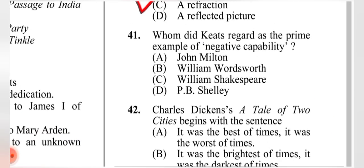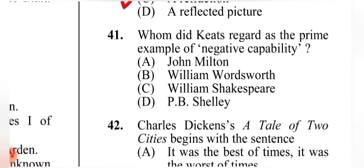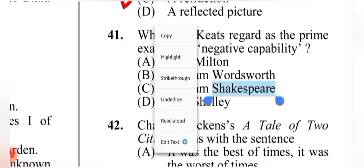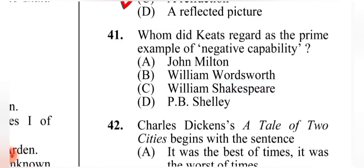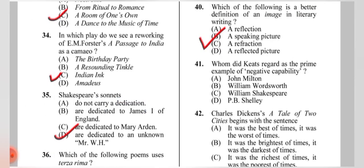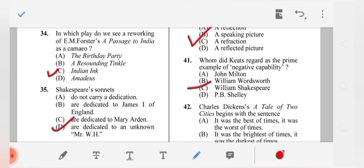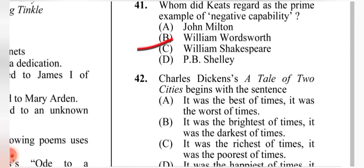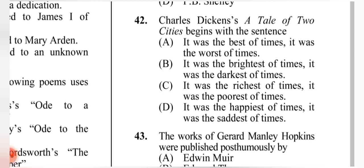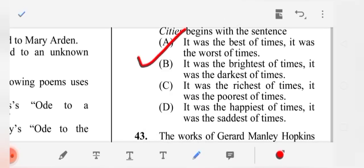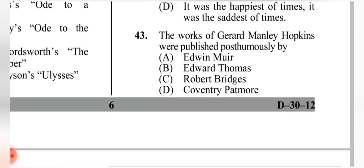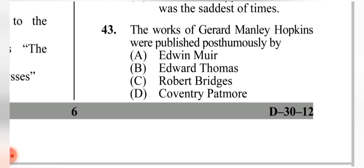Question 41: Whom did Keats regard as the prime example of negative capability? The correct answer is (C) William Shakespeare. Question 42: Charles Dickens' 'A Tale of Two Cities' begins with which sentence? The correct answer is (A): 'It was the best of times, it was the worst of times' — please look up the full opening lines.